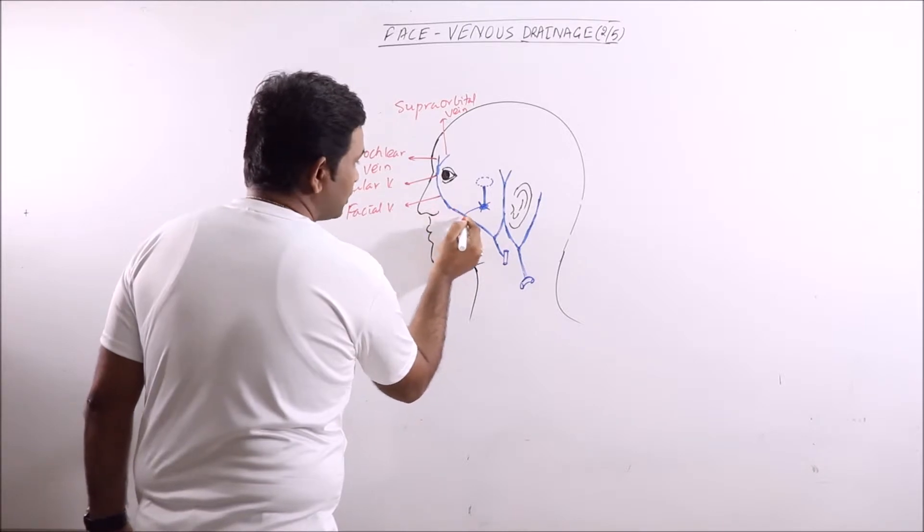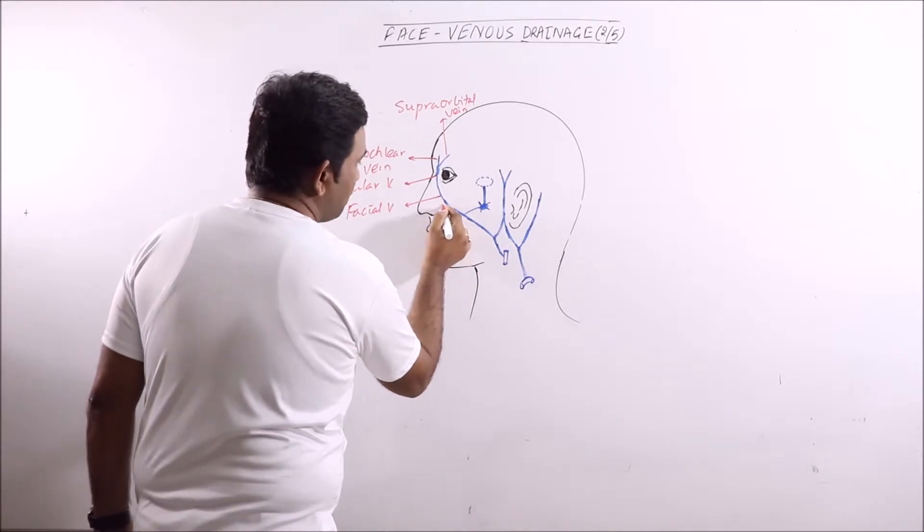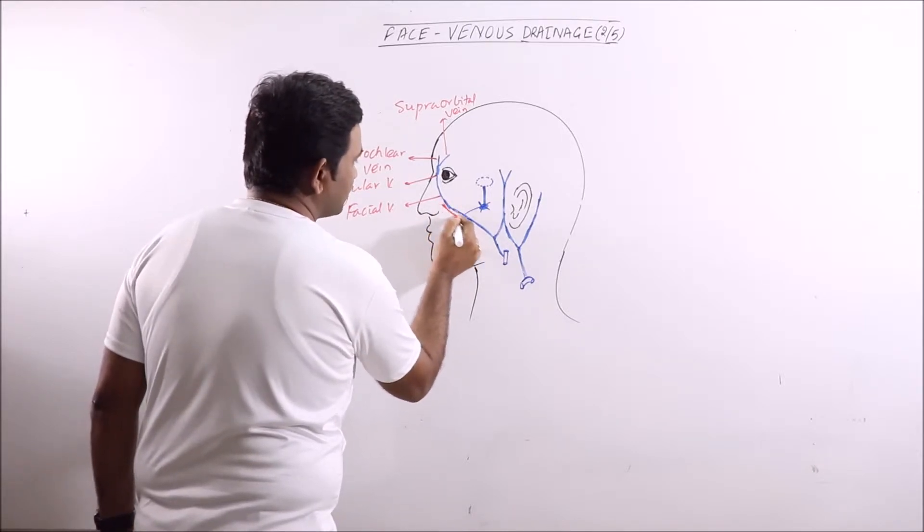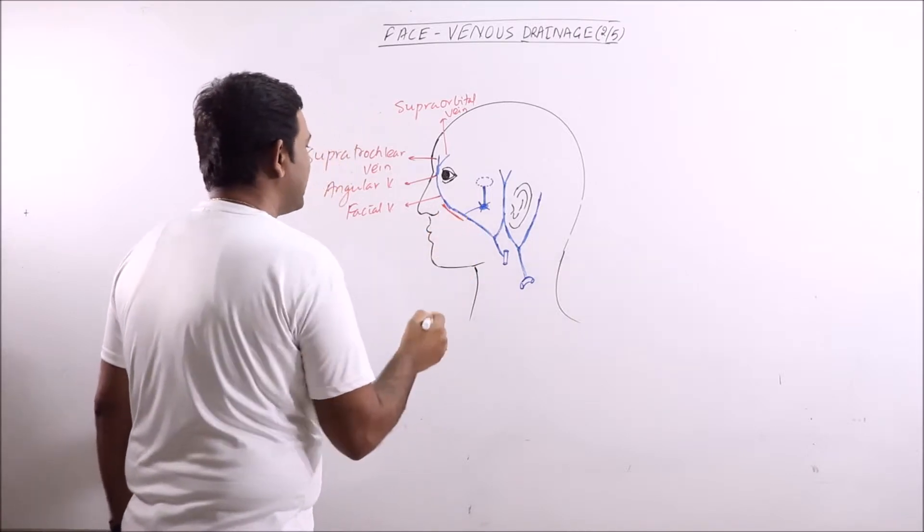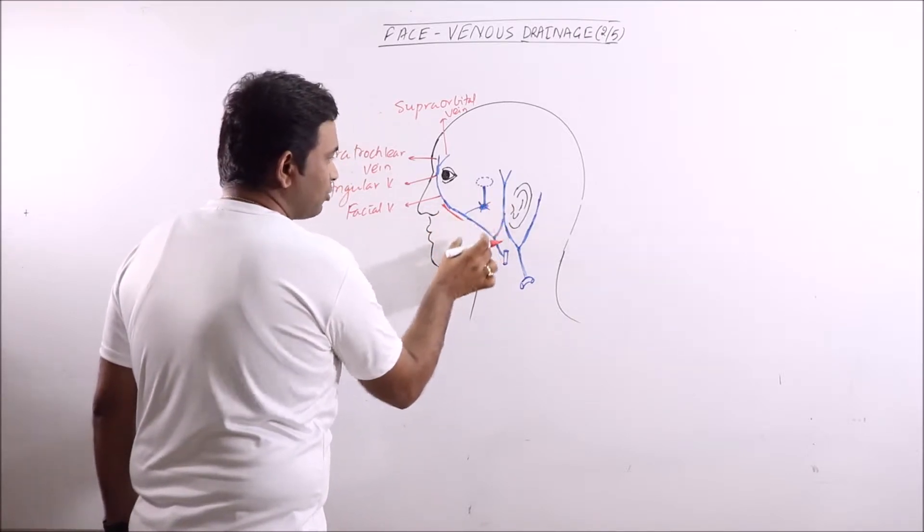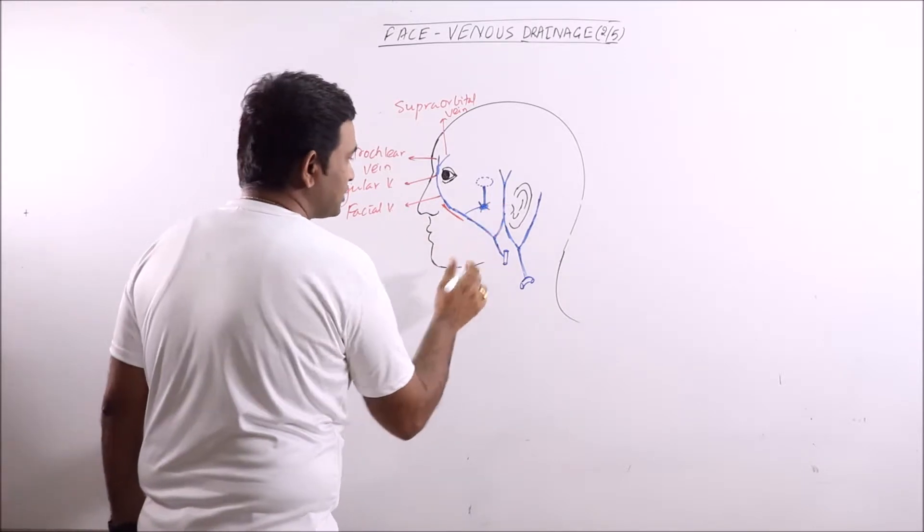It continues downwards and backwards behind the facial artery. This is the facial artery, so it continues behind that. It crosses the anteroinferior angle of the masseter muscle.